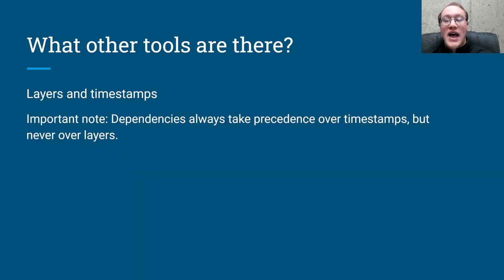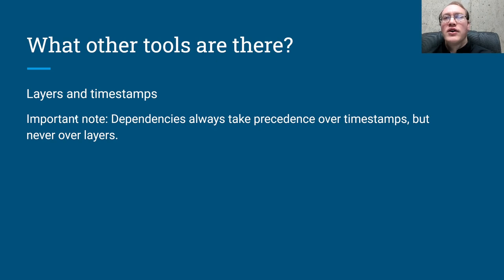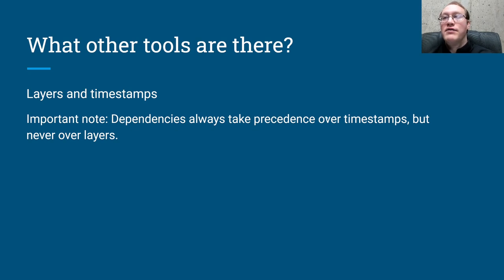What other tools do we have? Layers and timestamps. If you were wondering what the three easy steps were, that's them: layers, timestamps, and dependencies. Those are the tools we use to decide which continuous effect applies next. The important thing I wanted to point out here is that dependencies always take precedence over timestamps if a dependency exists, but never over layers. In fact, one of the prerequisites for being a dependency is that both continuous effects have to apply in the same layer. If there is a dependency, it will always take priority over what the timestamps say, but it will never take priority over what the layers say. The layers is always step one, no matter what.